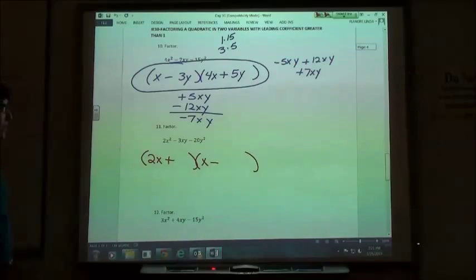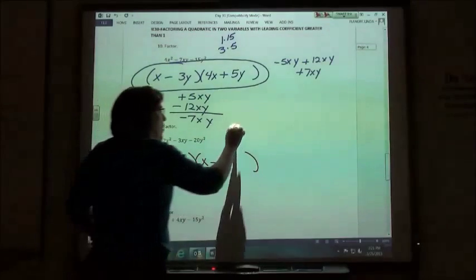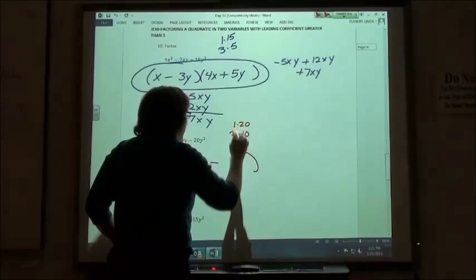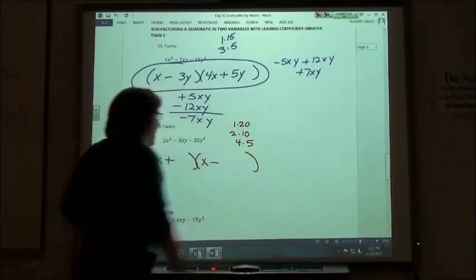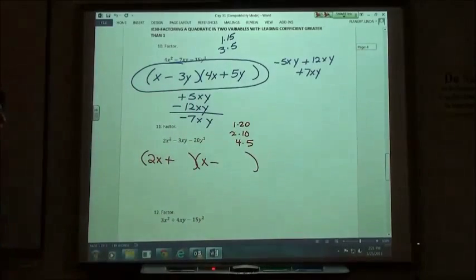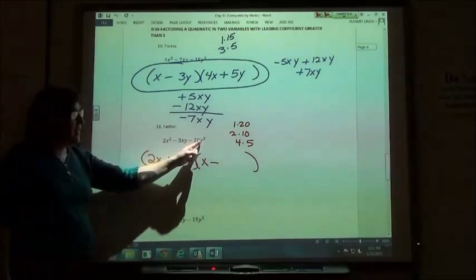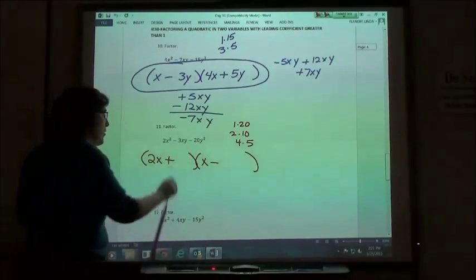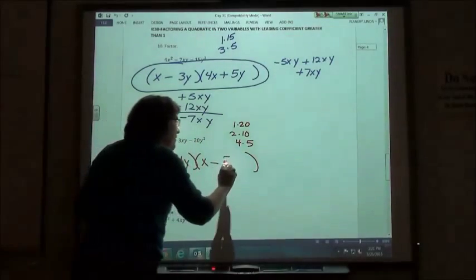And then I've got to do my factors for 20. 1 times 20, 2 times 10, 4 times 5. I'm going to start with the 4 and the 5. I've got to keep in mind that I've got to put the y's on with my values, so 4y and 5y.